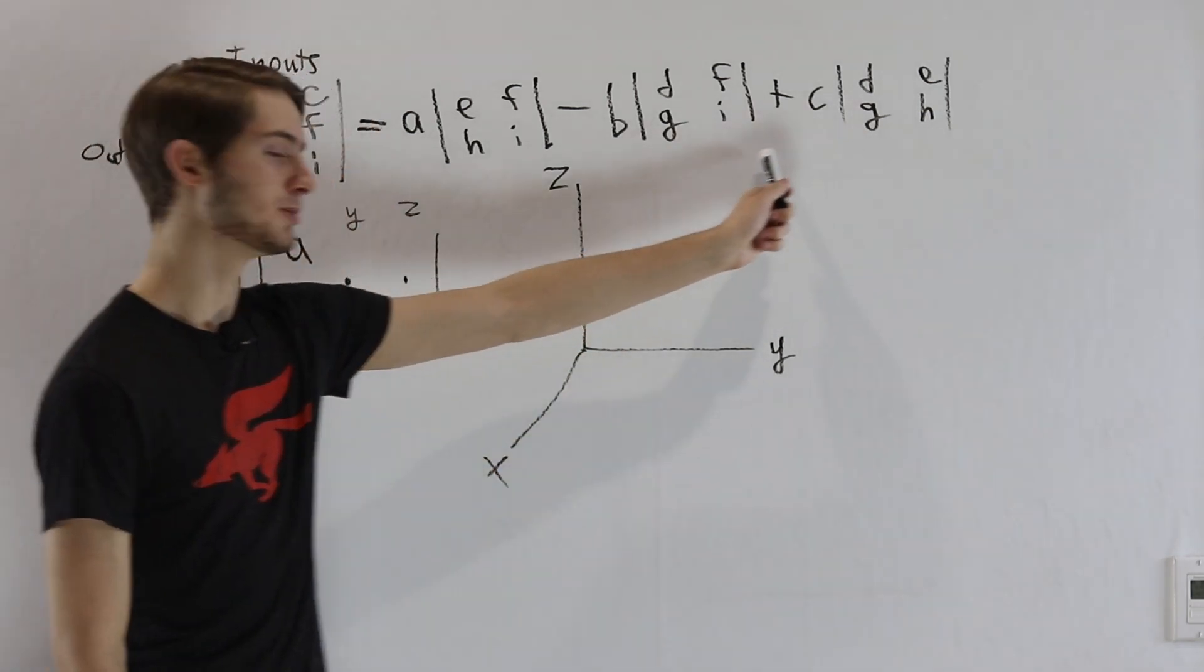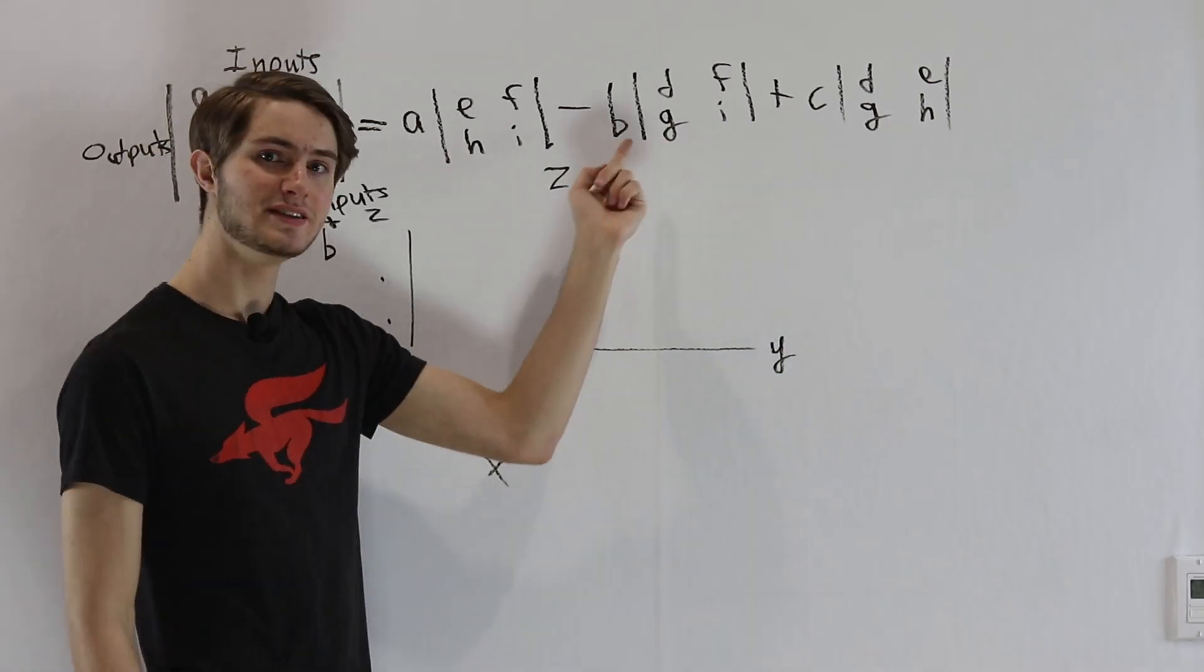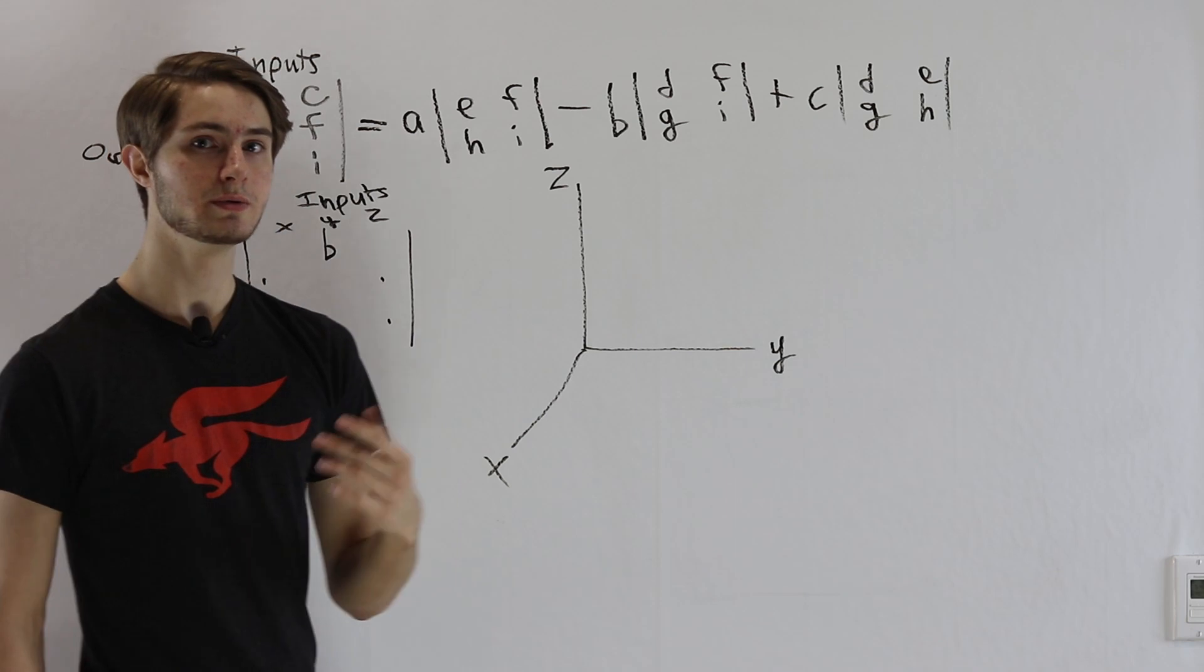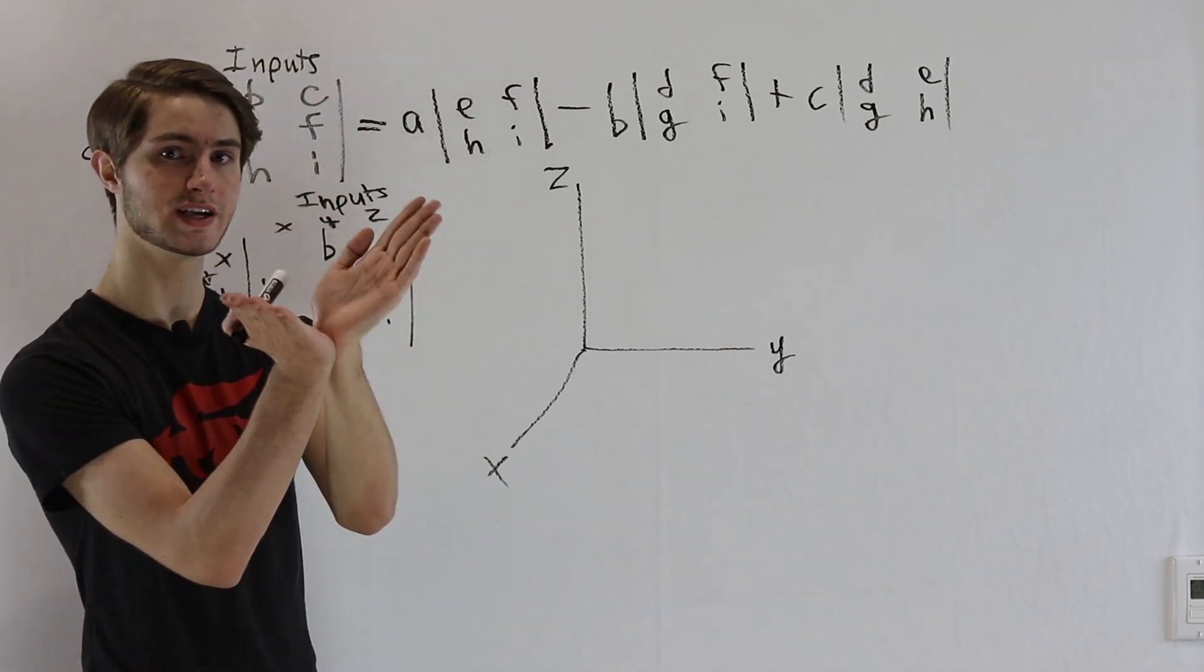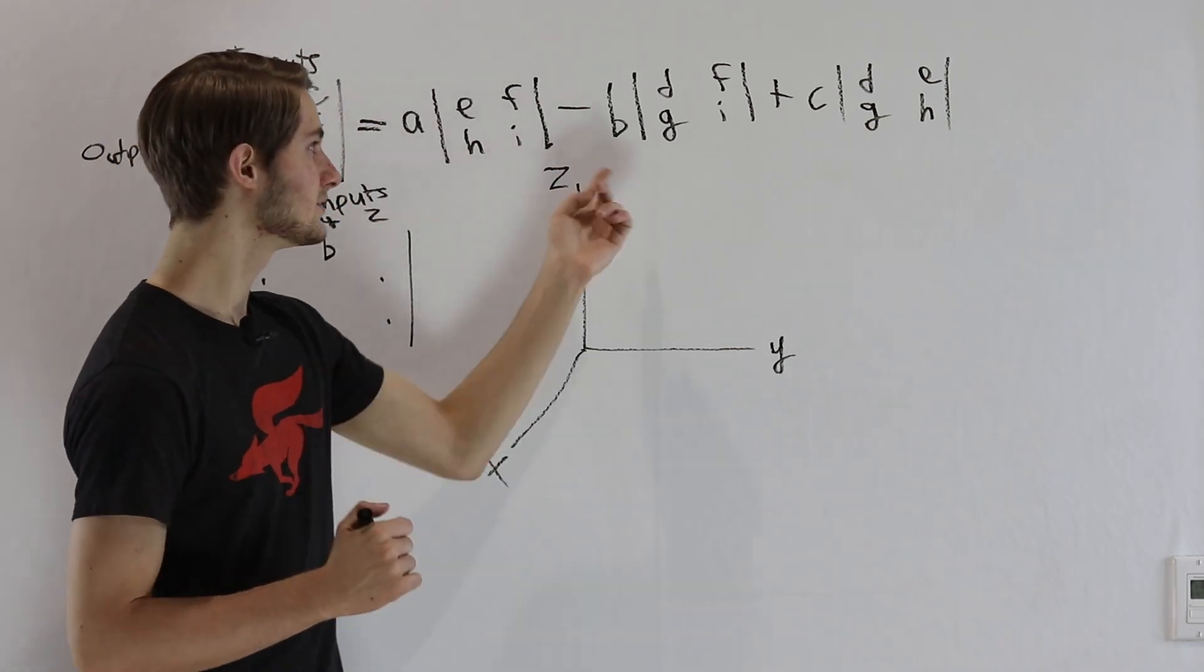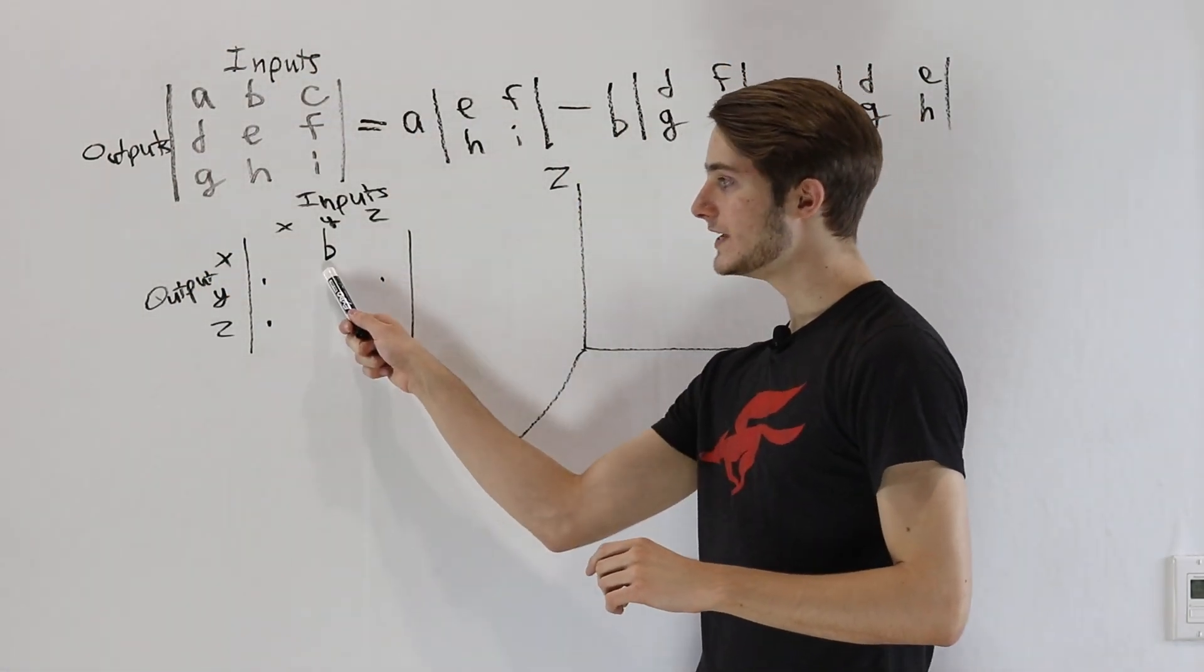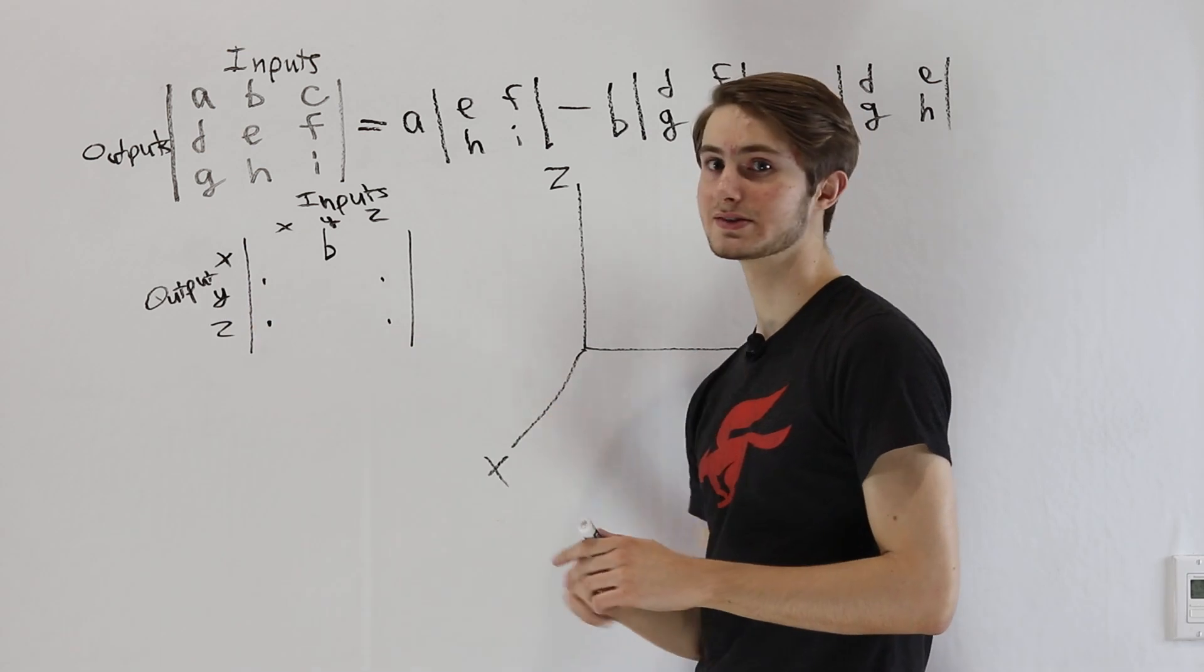But now we have these extra two parts. Now in order to understand this second component here, B times the determinant of this matrix, we have to start thinking about that book closing idea from the 2D determinant video. Let's take a look at what B means first.